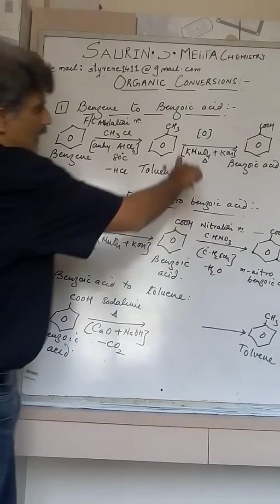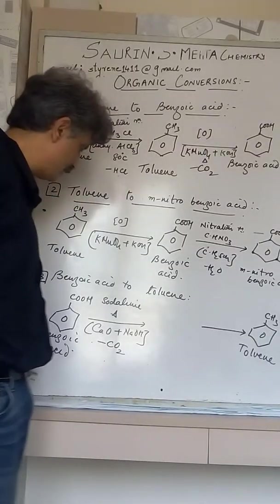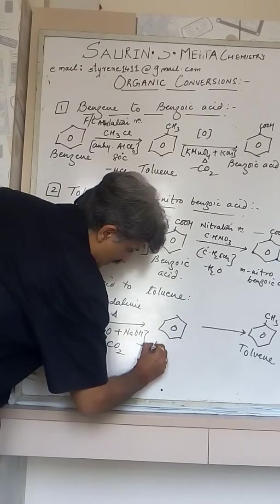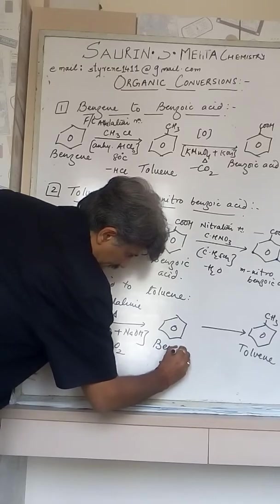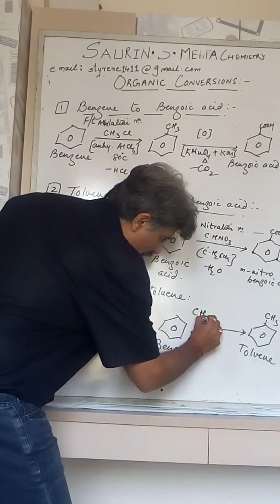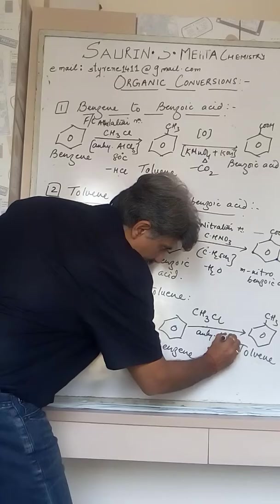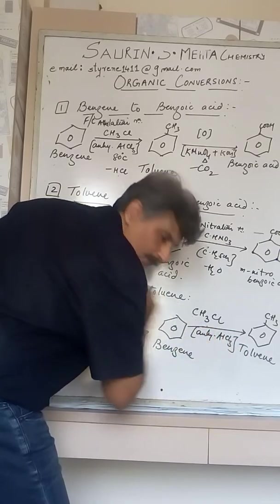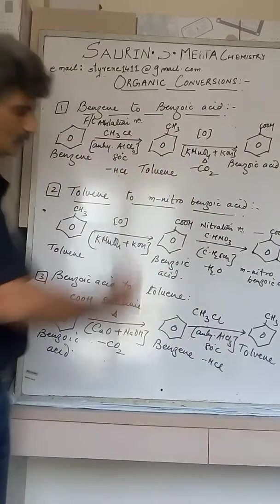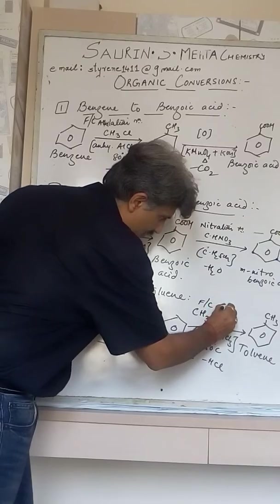And as carbon dioxide is eliminated, CO2, so this compound converts into benzene. And now from benzene you can get toluene by performing Friedel-Craft alkylation. You remember the things very easily, correct? At 80 degree Celsius and minus HCl, so you get Friedel-Craft alkylation per formation reaction and you will get toluene from benzene.